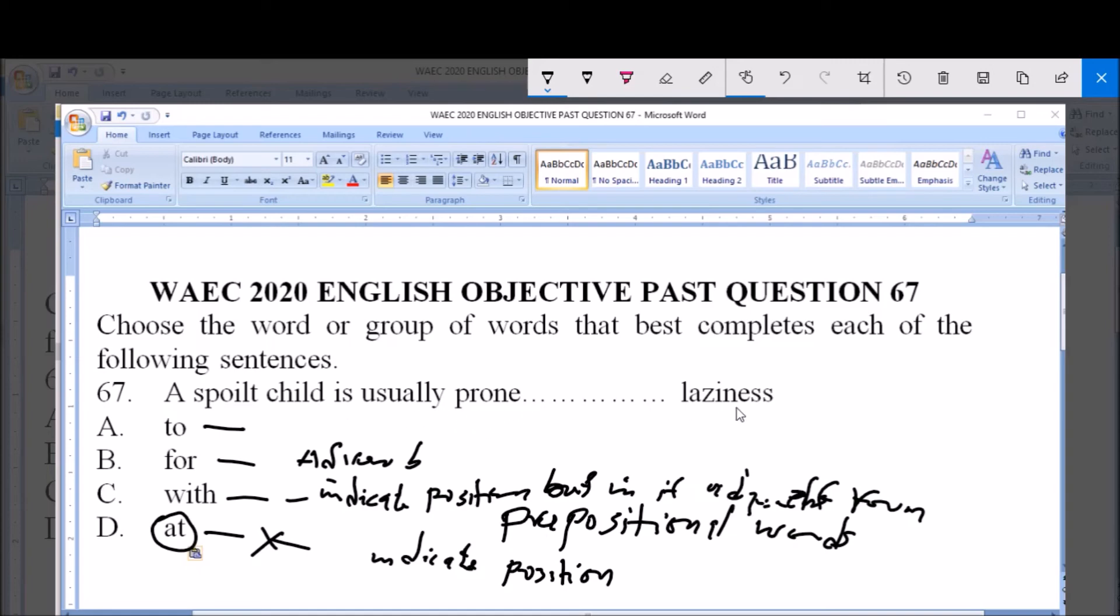A spoiled child is usually prone to laziness. So option A is correct.